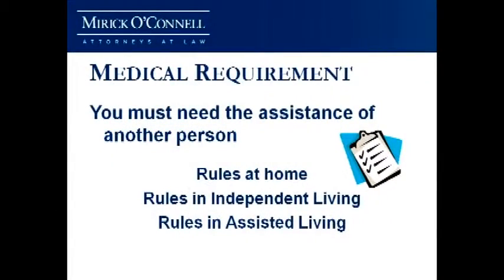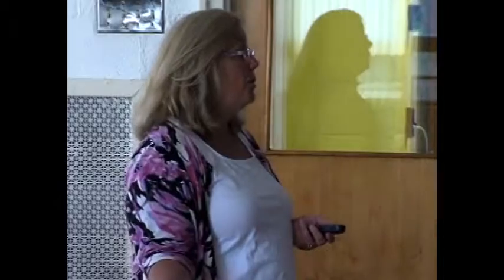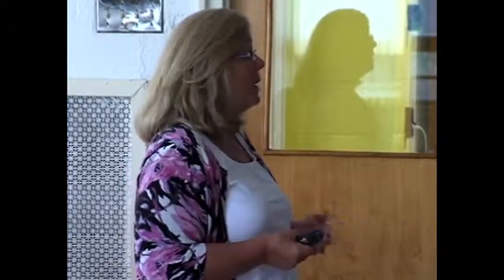You have to need the assistance of another person with at least two activities of daily living. A lot of our seniors might sponge bathe and only take a shower once a week or every other week. And when they take that full shower, somebody's doing a standby assist — that's an activity of daily living, even though it might only happen once or twice a month. Generally the person doing the standby assist doesn't leave while they're in their towel and wet; they stay and assist a little bit with dressing. That's a standby assist with dressing, and we're at our two activities of daily living.